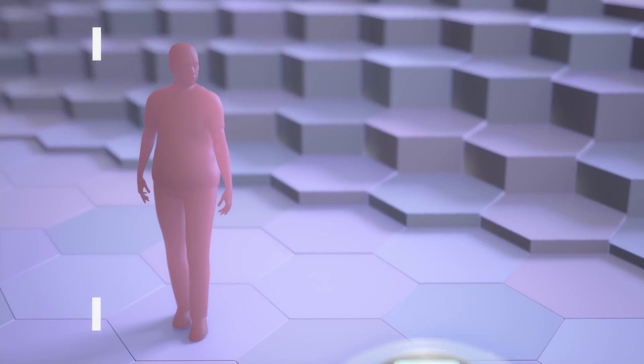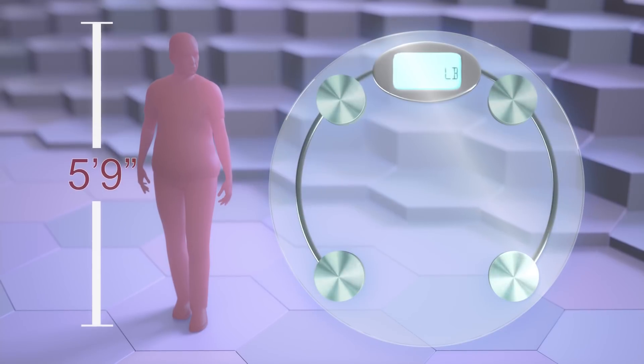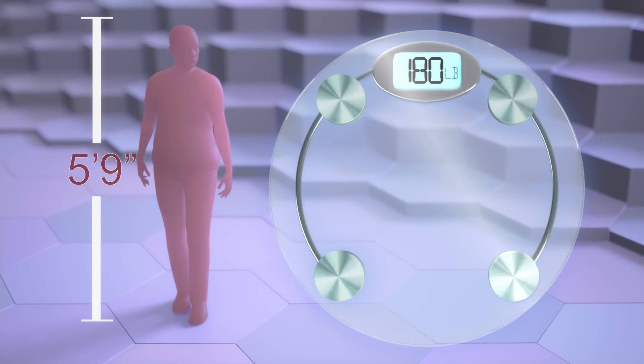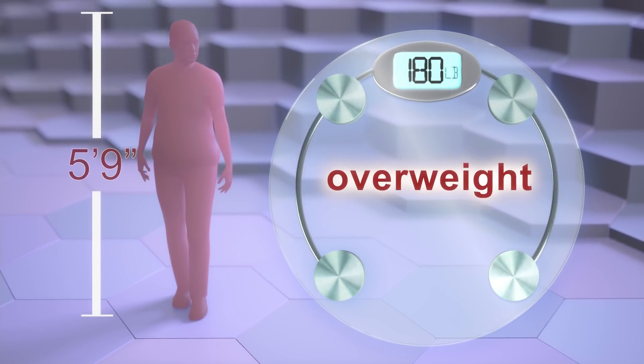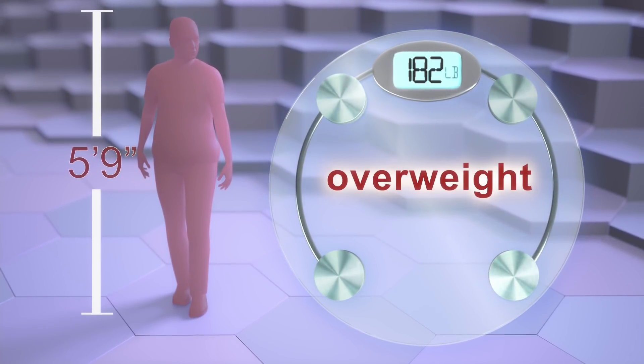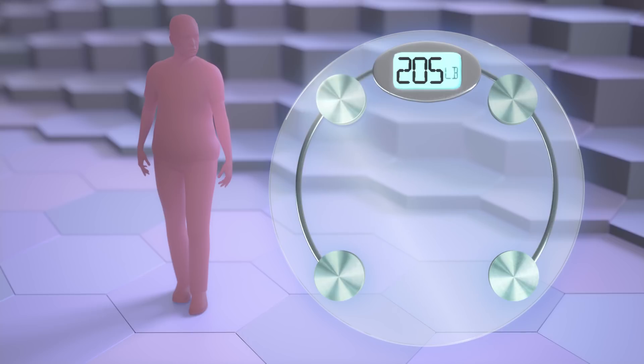A person who is 5 foot 9 inches and 180 pounds is overweight. If they are above 205 pounds, they are obese.